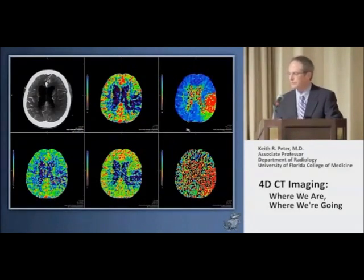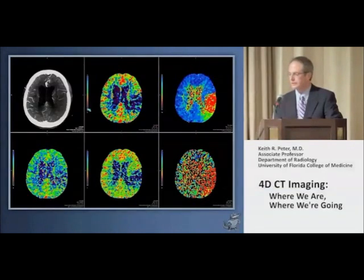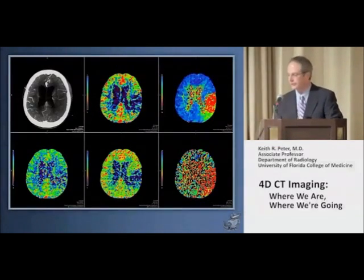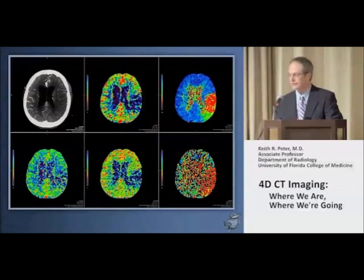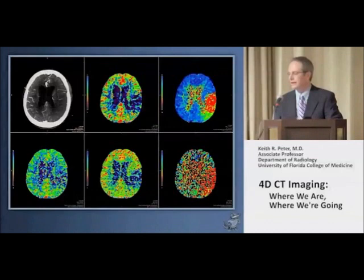Here you can see the maps we're looking at. We use the time to peak map to tell us where to look, then we go to the blood volume. The very dark areas — the very black and dark purple colors — tell us this is a very significant area of infarction. The mean transit time map is also showing that those same areas and the surrounding tissue, really everything, is down. We do not have a significant penumbra on this.